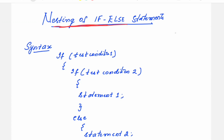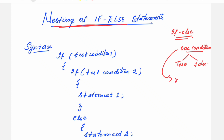Nesting of if-else statements is completely different from the simple if-else statement. In an if-else statement, we are just checking one condition. Based on the result — if it is true, one set of statements is executed; if it is false, another set is executed. But if we have to test more than one condition, then we need to use nesting of if-else statements.